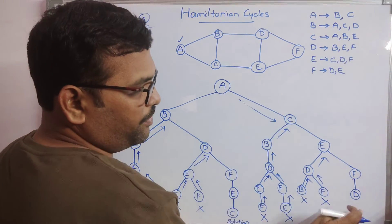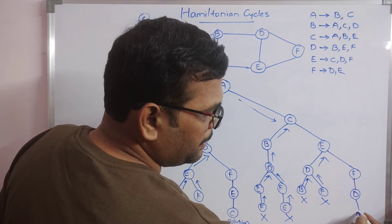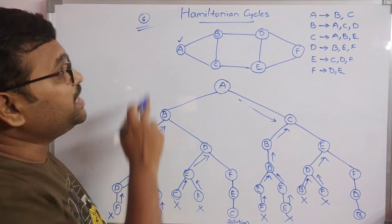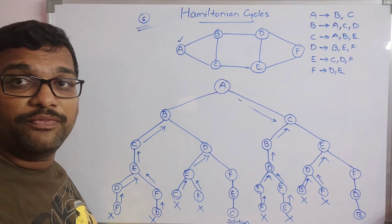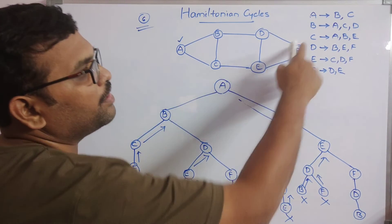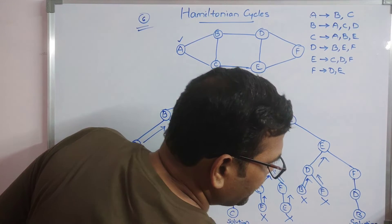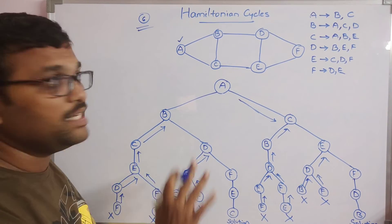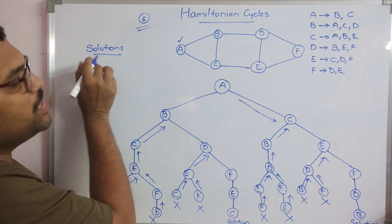Now try path A-C-E-F, then go to D. From D: edges B, E, F — E and F are visited, so go to B. In path A-C-E-F-D-B: C has edges A, C, D — A is there, C is there, D is there. Count the nodes: one, two, three, four, five, six — all nodes visited exactly once. Check edge from B to A — yes, B has an edge to A — so this forms a Hamiltonian cycle!